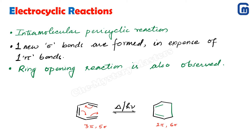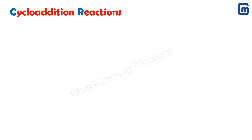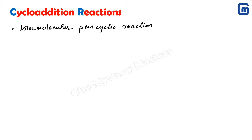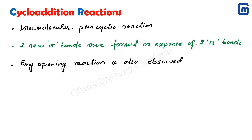Now let us discuss the second type of pericyclic reaction: cycloaddition reactions. As the name suggests, there will be addition of species and a cyclic product will be generated. This reaction is generally intermolecular, meaning two different species are involved. Two sigma bonds are formed at the expense of two pi bonds — two pi bonds are lost and two new sigma bonds are formed. Ring-opening reactions can also be observed apart from ring-closing.